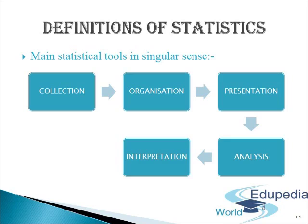The fourth step is analysis of data. The next stage is the analysis of the presented data. There are a large number of methods used for analyzing data, such as averages, dispersion, correlation, etc. The last step is interpretation of data — this implies the drawing of conclusions on the basis of the data analyzed in the earlier stage. On the basis of these conclusions, certain decisions can be taken.